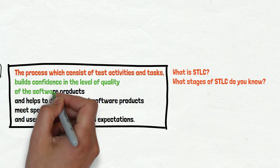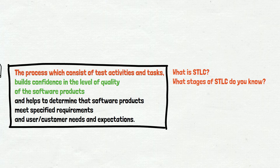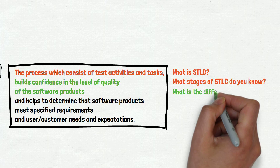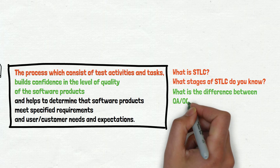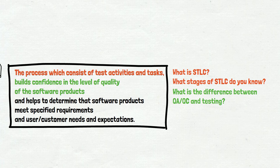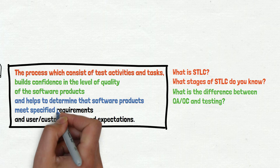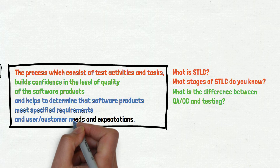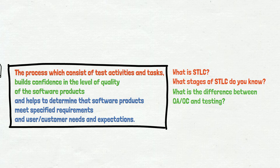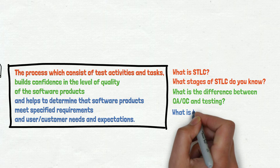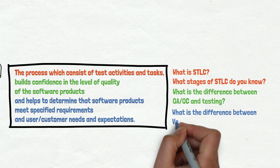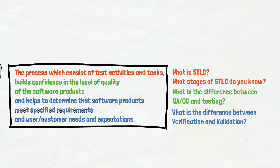The next sentence is: builds confidence in the level of quality of the software products. This one is related to the follow-up question: what is the difference between QA, QC, and testing? This is a popular question in an interview. The last sentence is: helps to determine the software products meet specified requirements and user/customer needs and expectations. This one relates to another popular question: what is the difference between verification and validation?